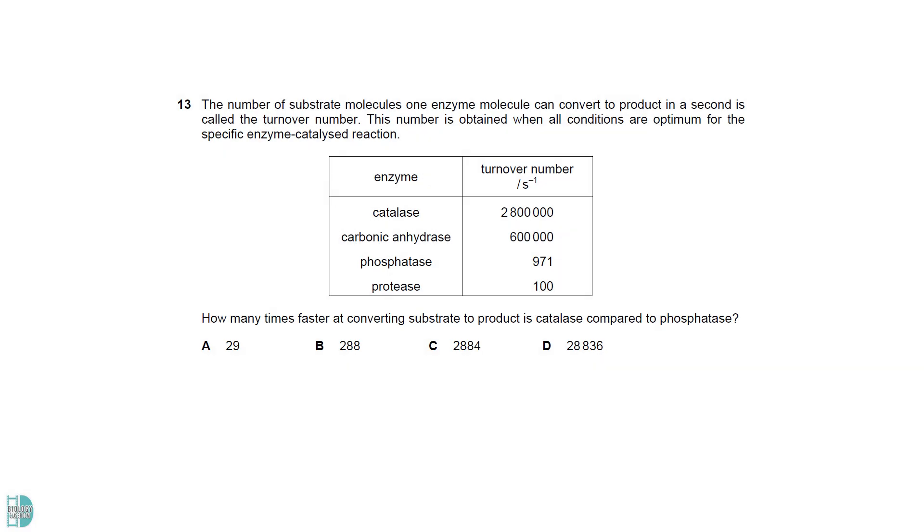To calculate how many times catalase is faster, we divide its turnover number by the phosphatase turnover number. You will get around 2883.6.